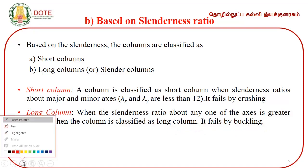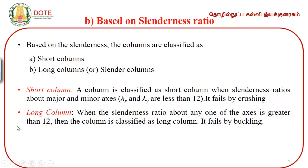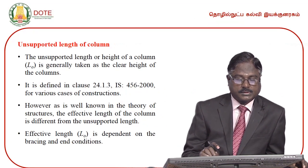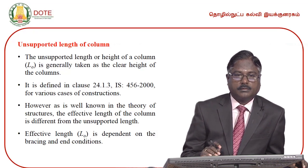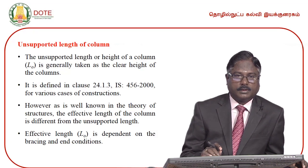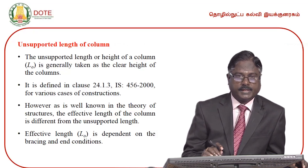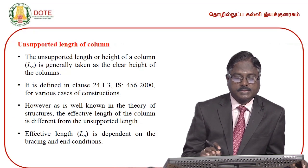Buckling is the deviation from the original configuration to the configuration obtained after the application of load. The unsupported length of a column is the clear height between the end restraints. The effective length depends on the bracings and end conditions — that is, the support conditions.